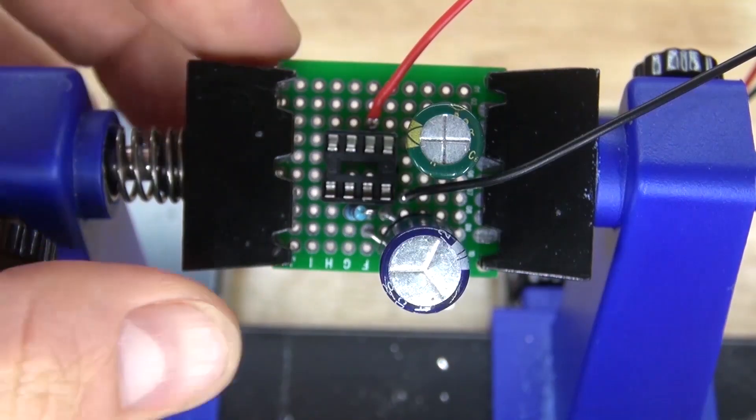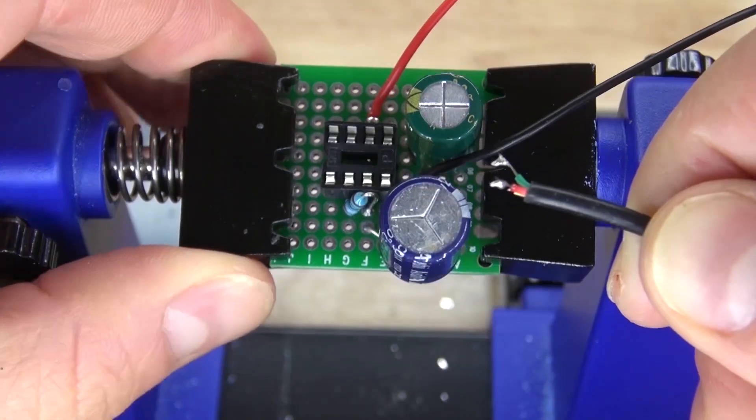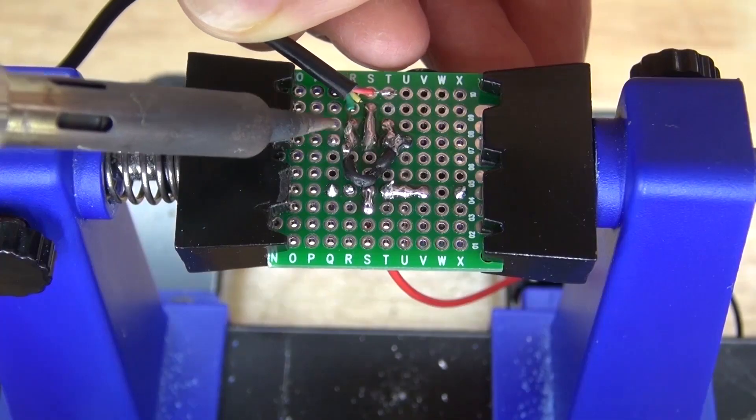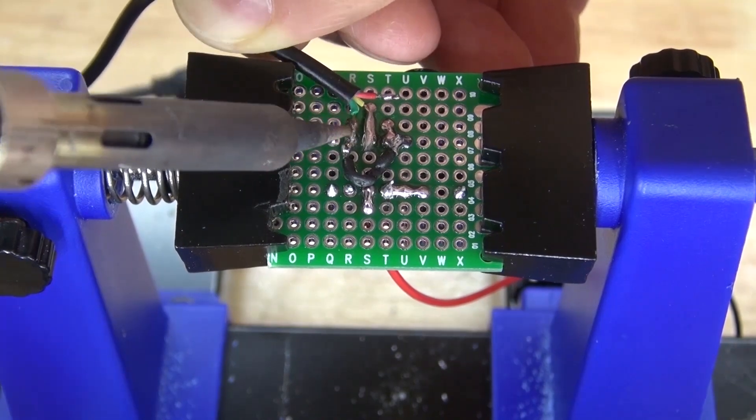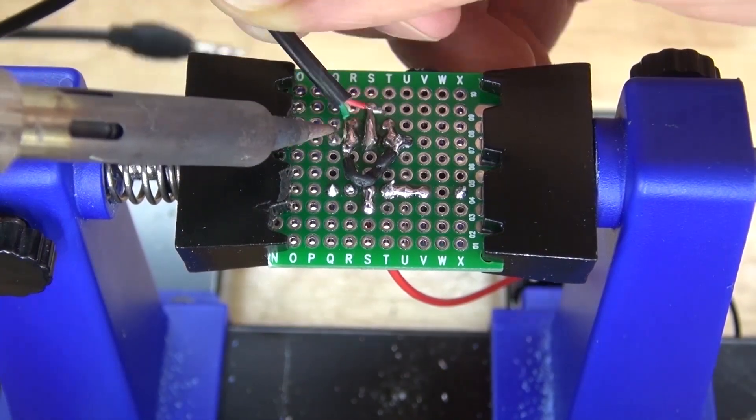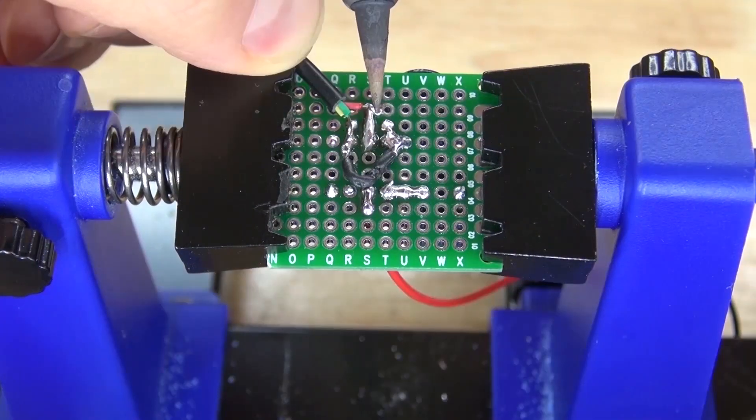Now take your audio jack, and the green is negative and the red is positive. Solder the green negative to pin 2, and then solder the red positive to pin 3.